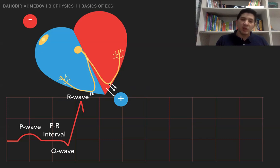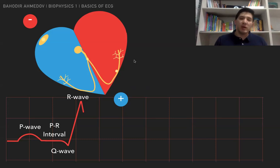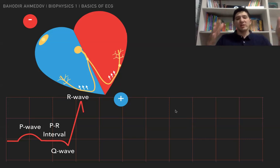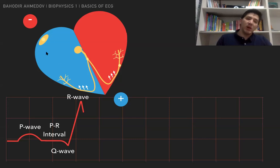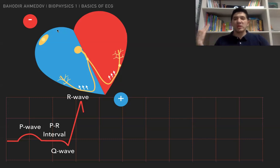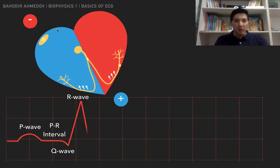Now the signal is transmitted in the direction of the Purkinje fibers, moving in that direction. The dipole is moving such that all the vectors are in the direction of the negative electrode. Whenever we have a dipole moving toward the negative electrode, we have a negative deflection. This negative deflection is called the S wave.